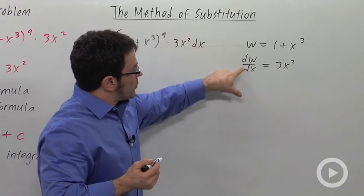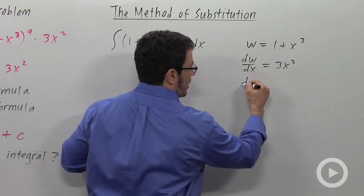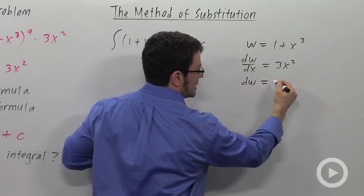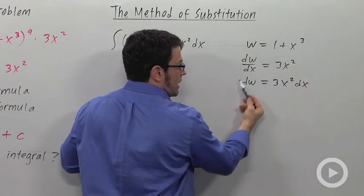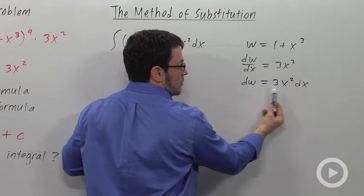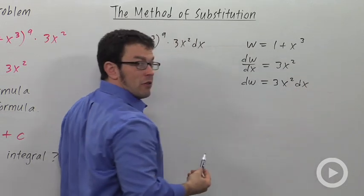You can get a differential from a derivative like this by multiplying both sides by dx. So the differential I'm going to need to change to is dw. And so this is going to be my conversion.